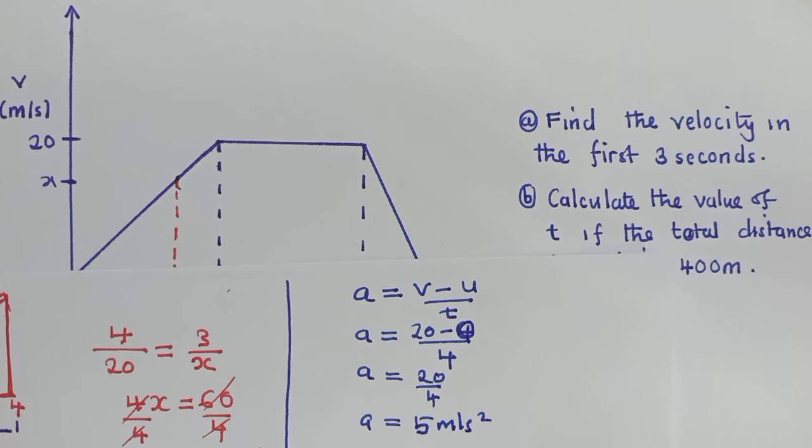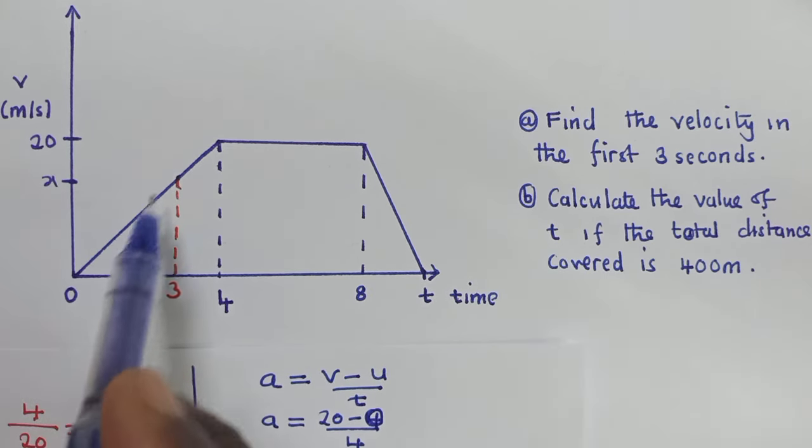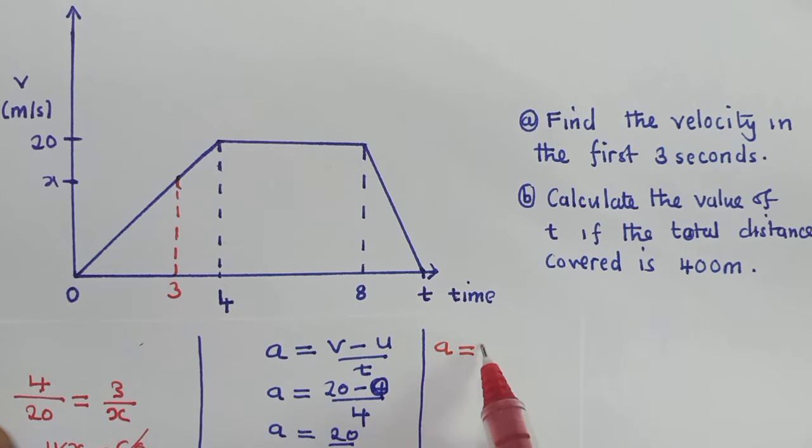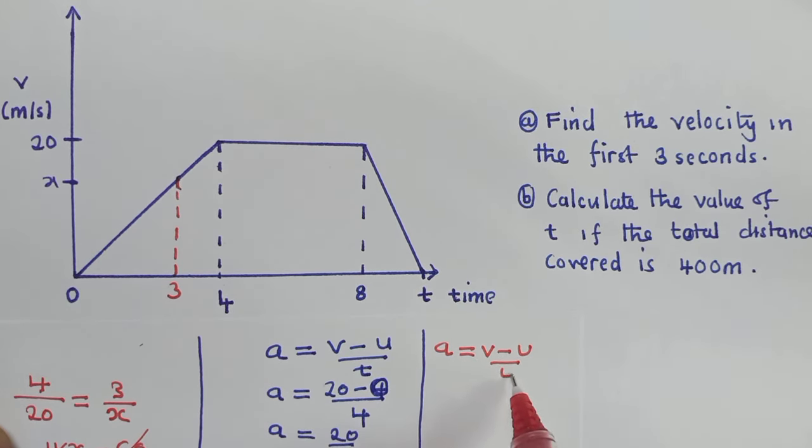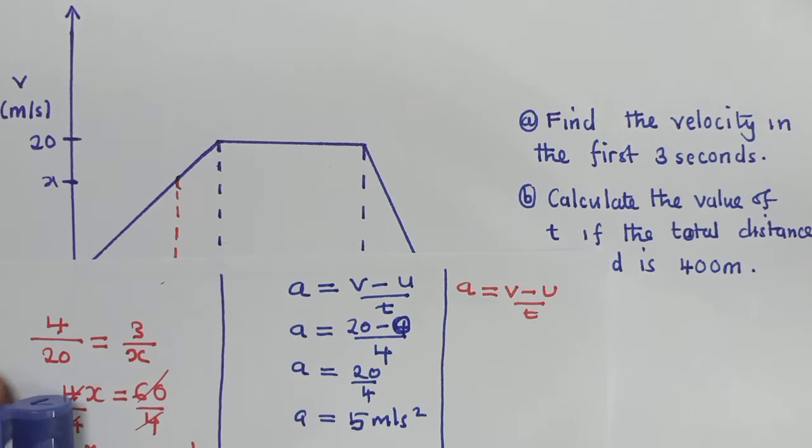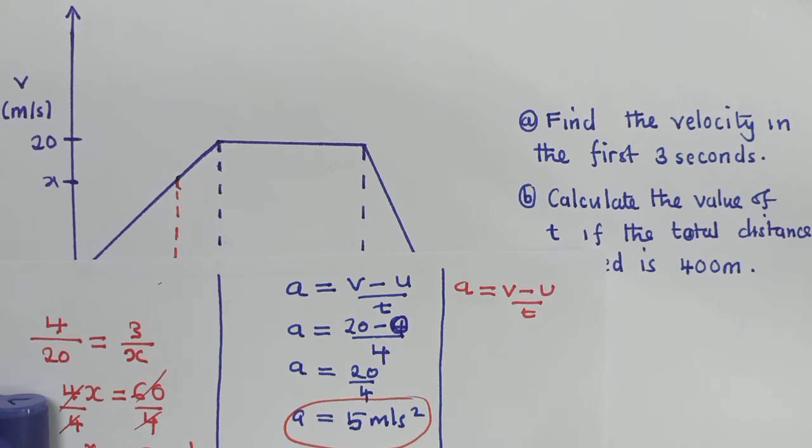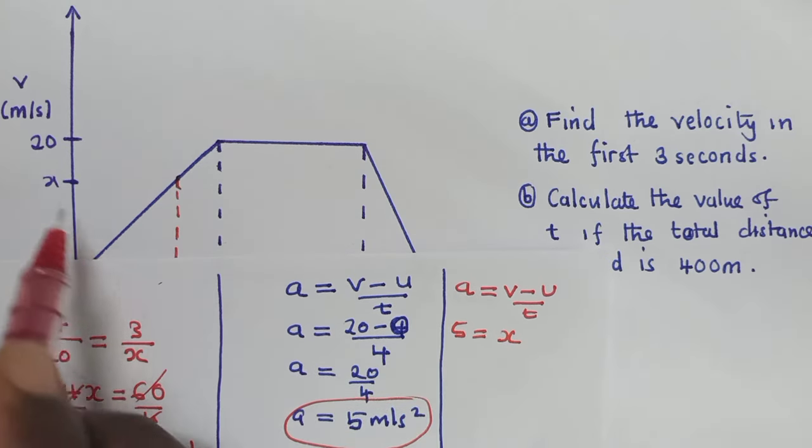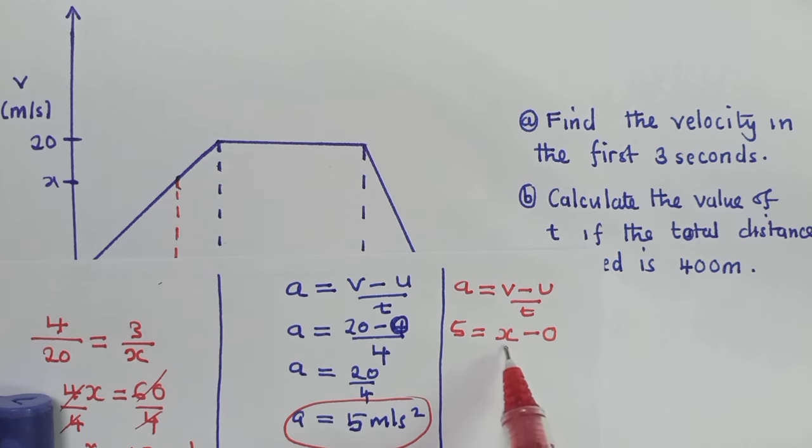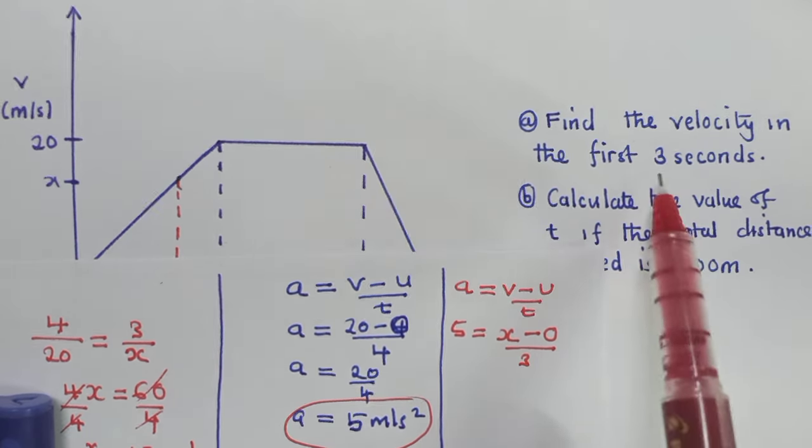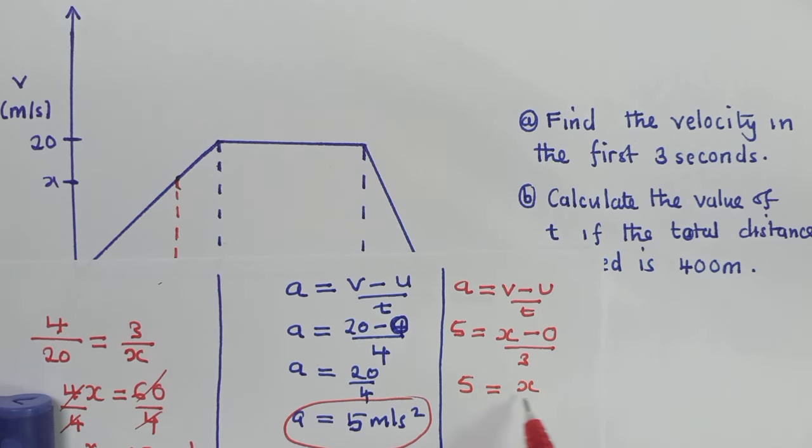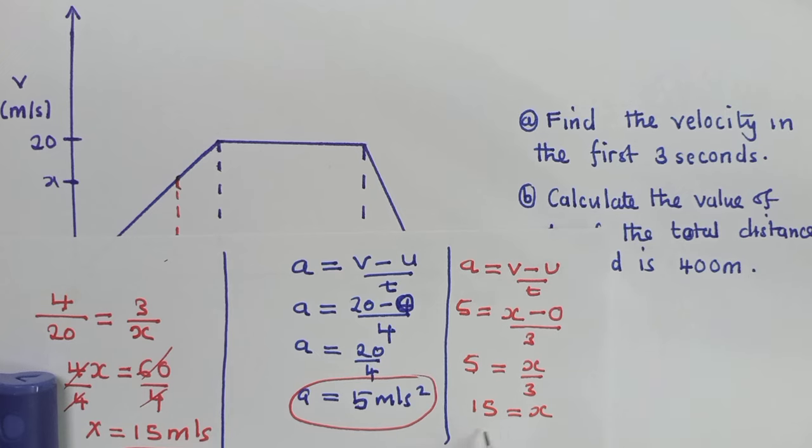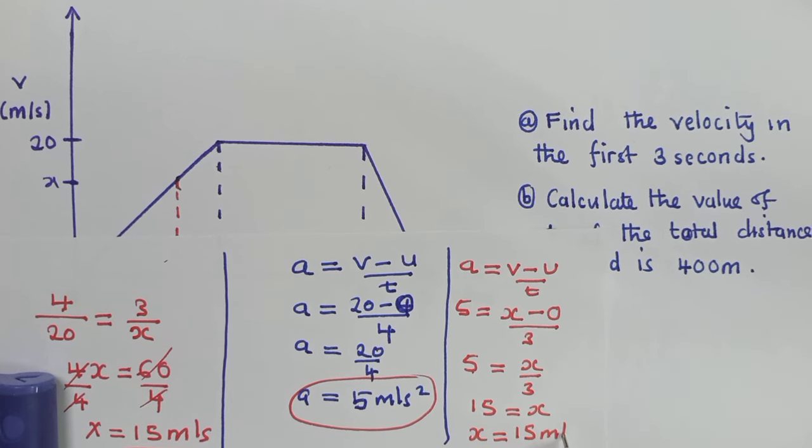But this is not our final answer. We are looking for the velocity here. So we will still use the same formula. Acceleration is equal to final velocity minus initial over time. Since the acceleration is the same, we'll just get what we found here and put it right here. Our final velocity will put x, what we are looking for. The initial velocity would be 0, time will be 3 seconds. You solve there. You remain with x over 3. You cross multiply. 5 times 3 is 15, which is equal to x. So x is equal to 15 meters per second.